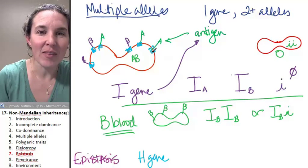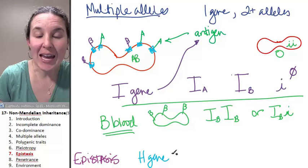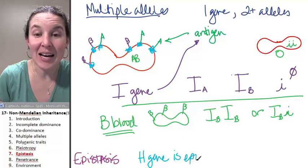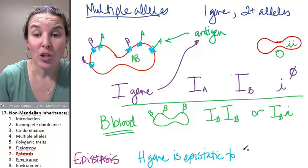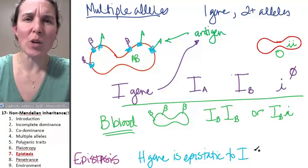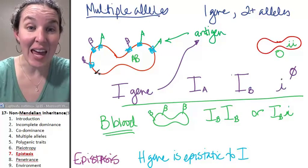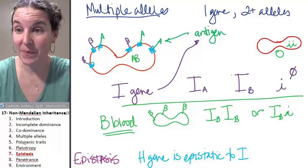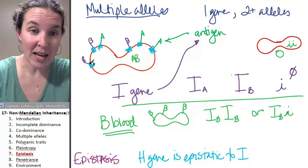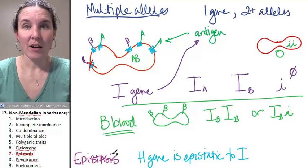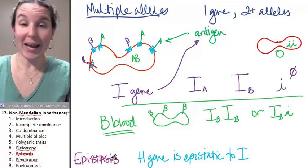Okay, now, H is epistatic to the I gene, which means that if H is wackadoozy, let's just pretend H is dead, long live H, H is dead.